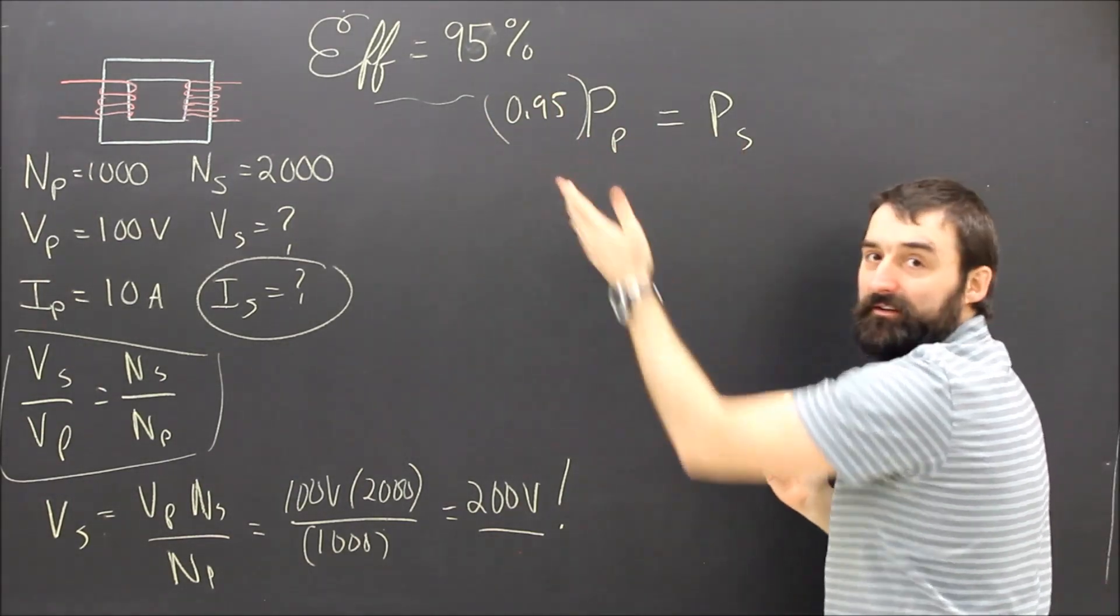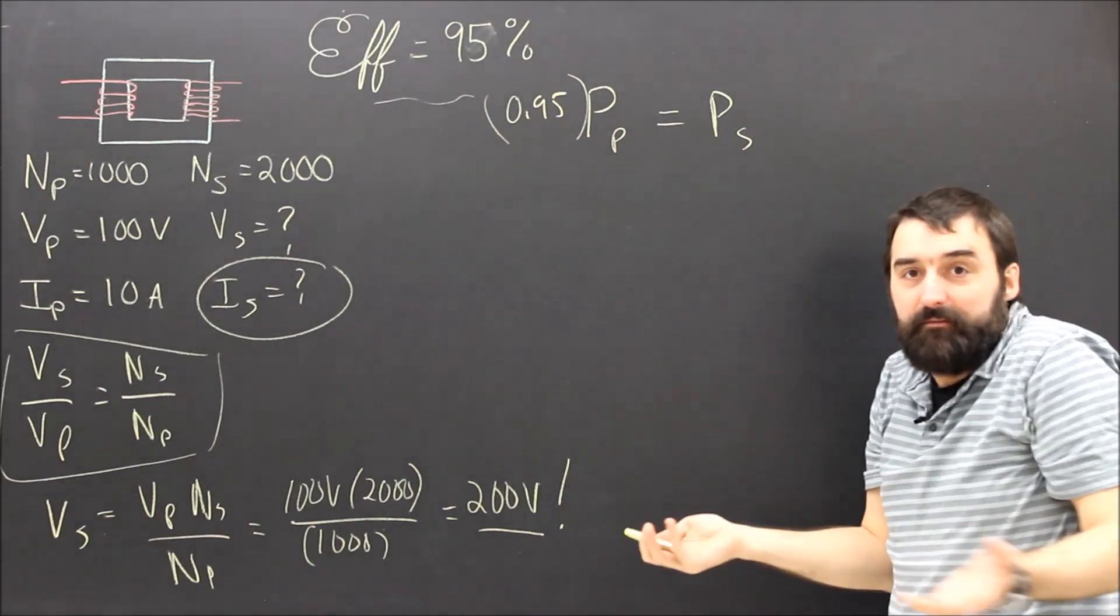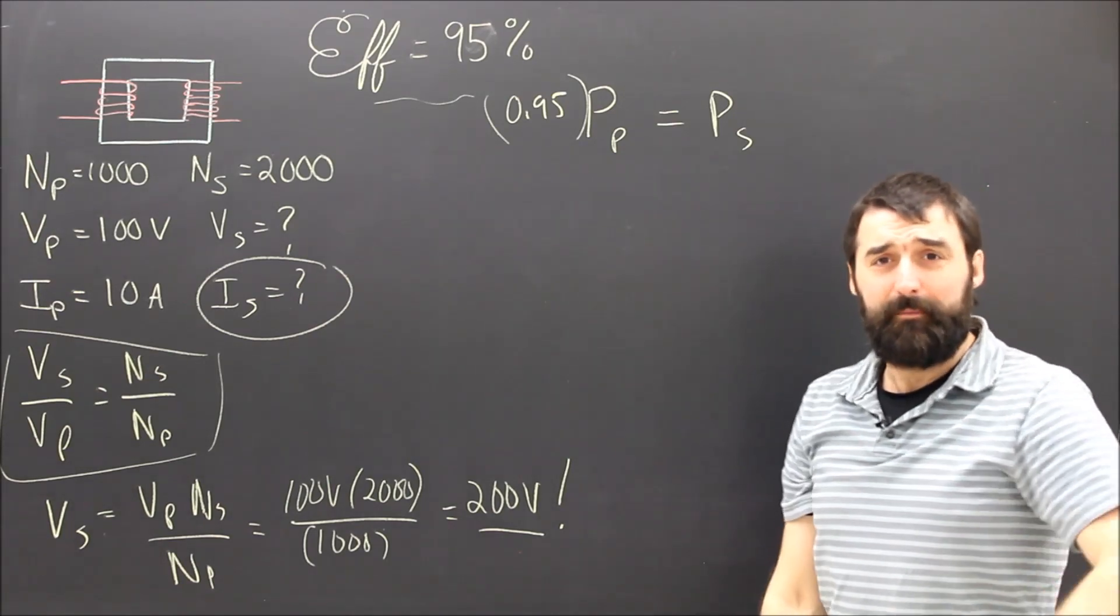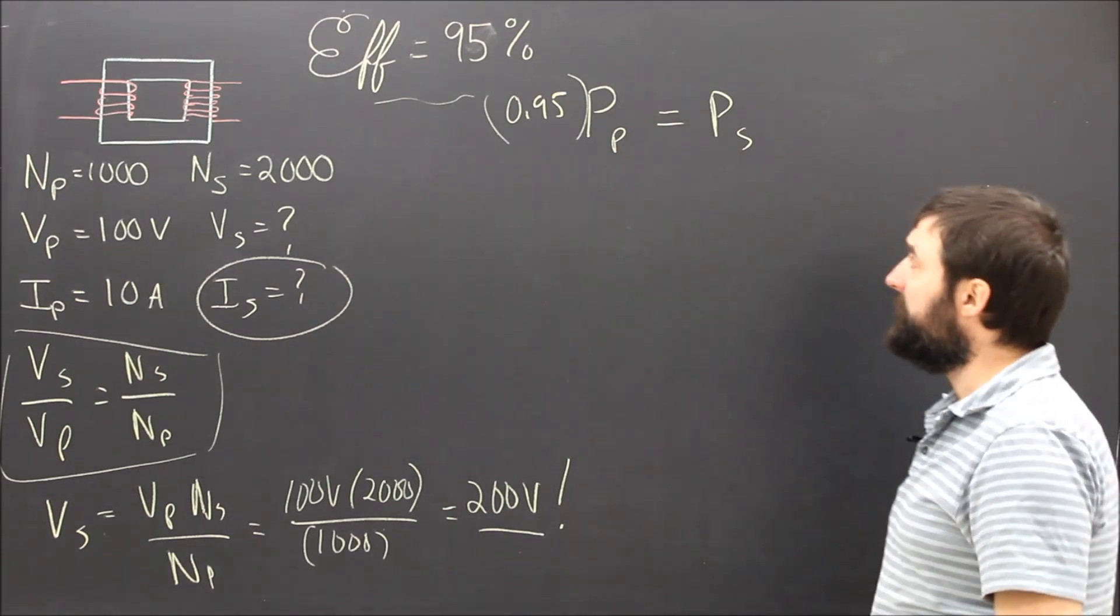Students often get that 0.95 on the wrong side. That's probably the most common mistake. And probably the only one for amongst kids who have actually tried this because it's really not very difficult.